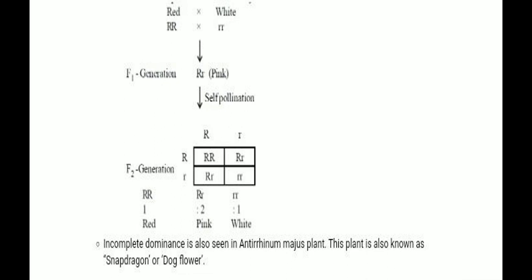The red flower has a capital R capital R genotype, and white flower has a small r small r genotype. The cross produces a pink color flower with capital R small r genotype. So red is incompletely dominant over white flower, producing the pink color.